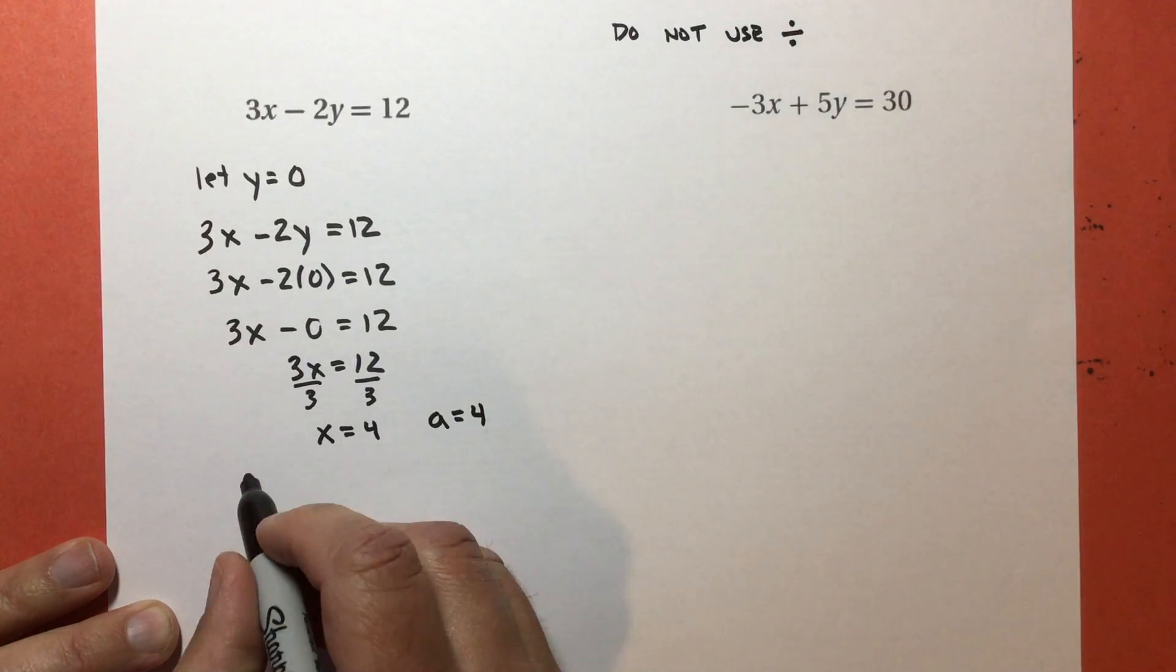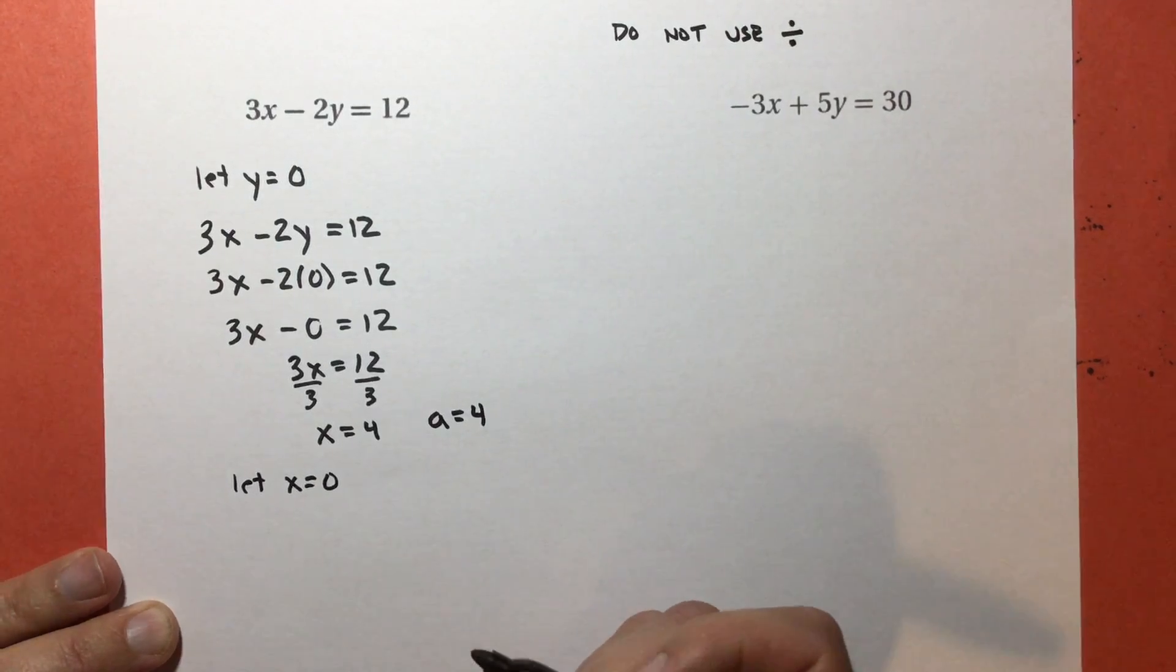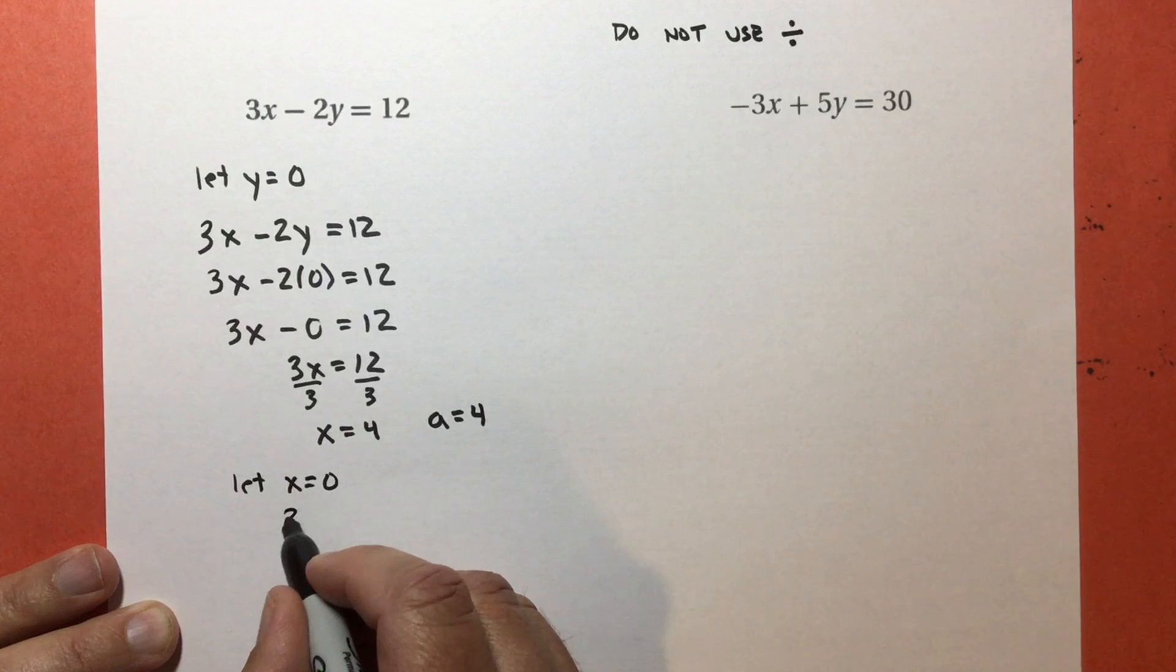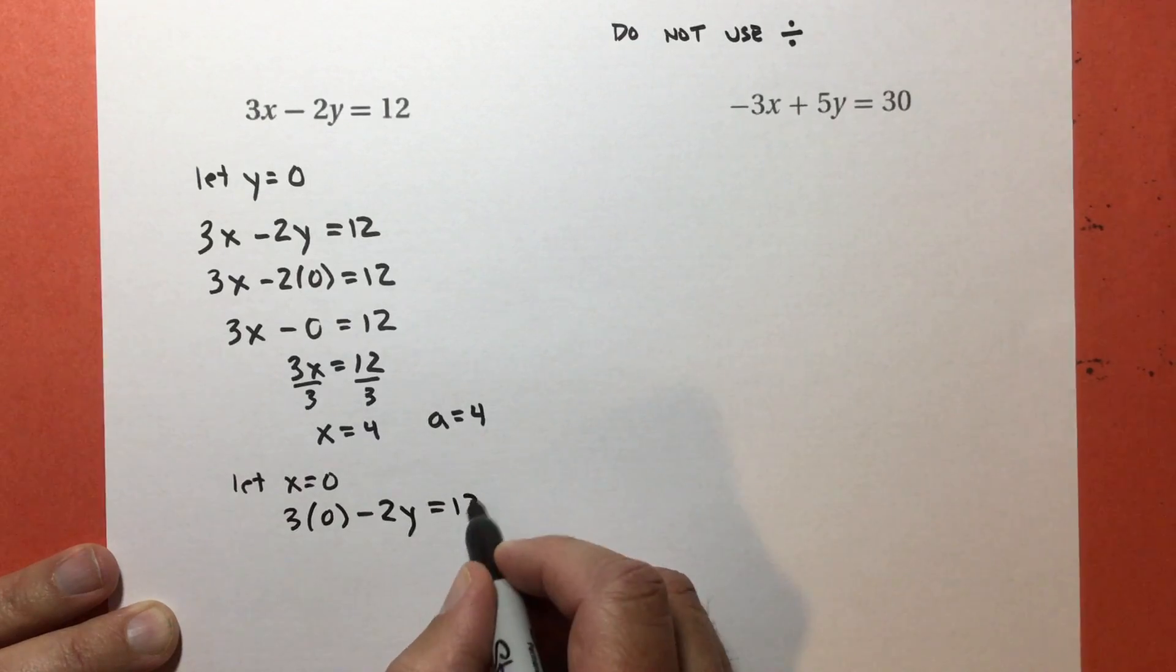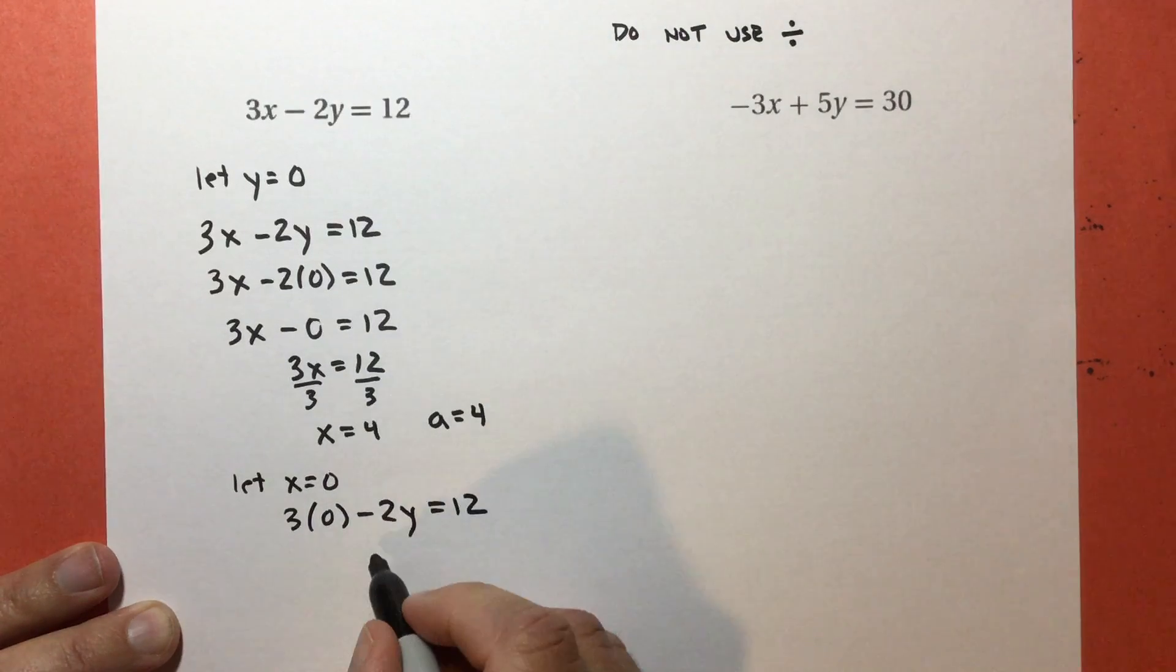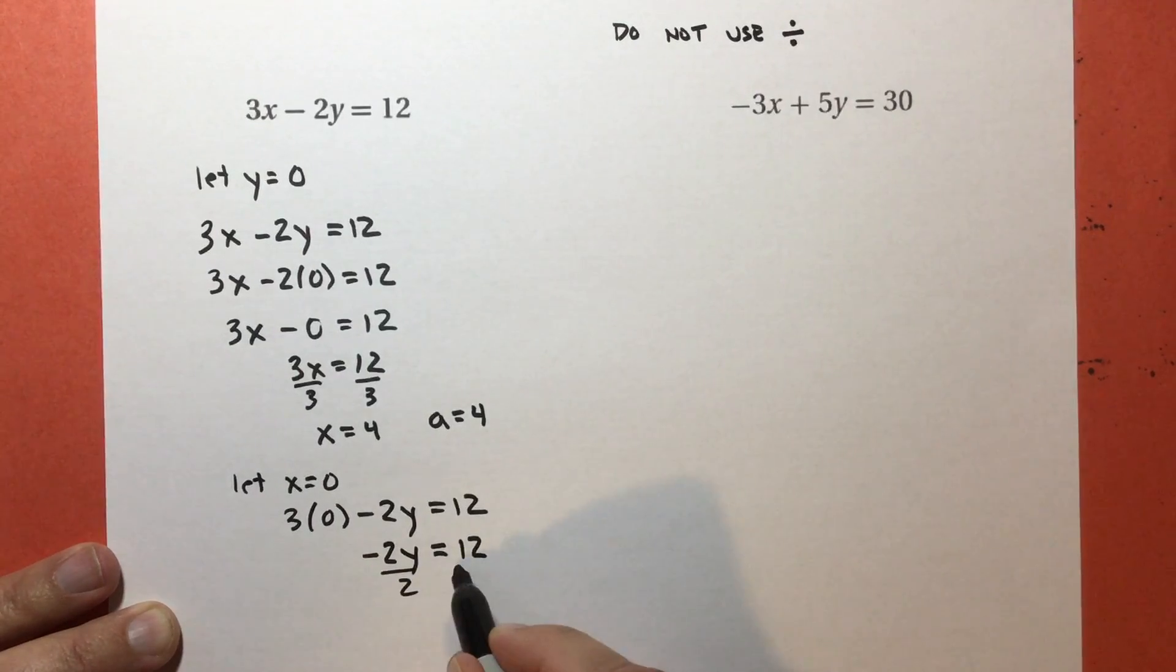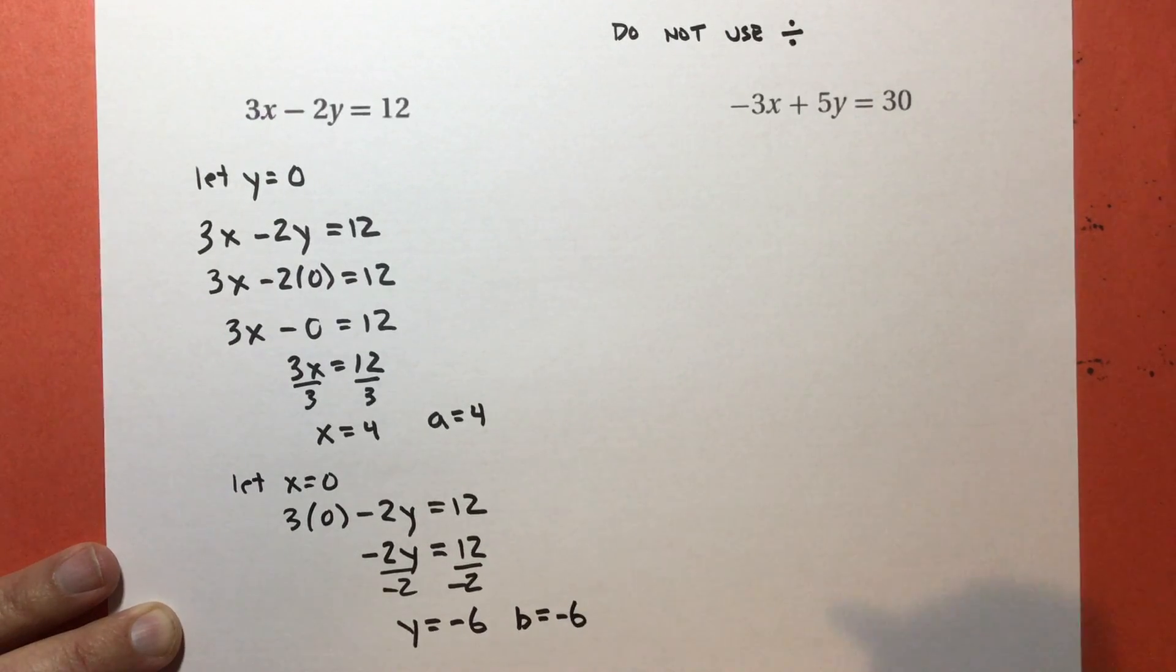So that's one of them. But now I've got to find the other one. I'm going to let x equal zero and find the y-intercept. So again, I've got 3x subtract 2y equals 12. If I do 3 times 0 subtract 2y, that's going to equal 12. So 3 times 0 is 0. I just get negative 2y equals 12. Divide by negative 2, and I get y equals negative 6.